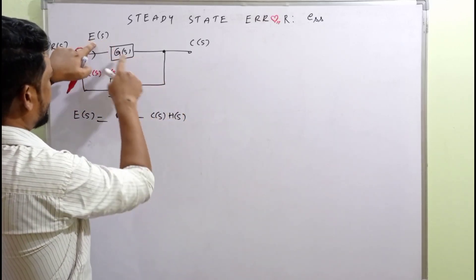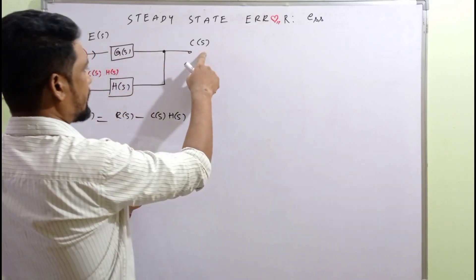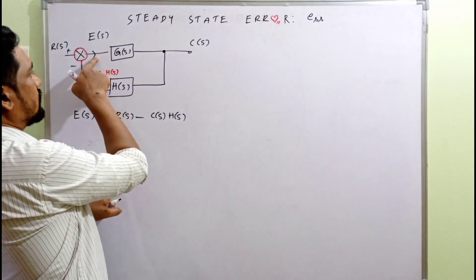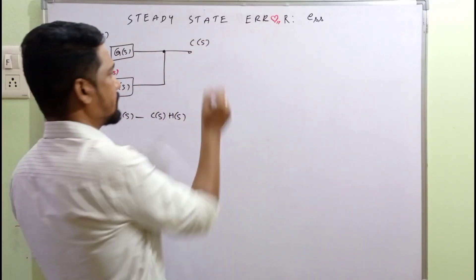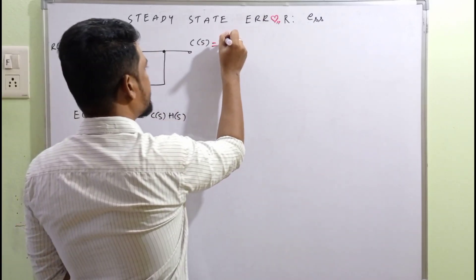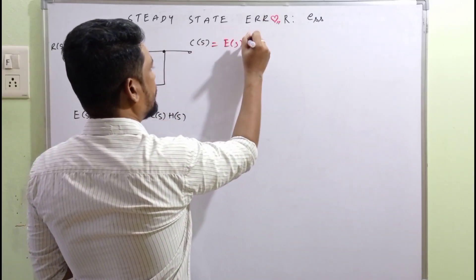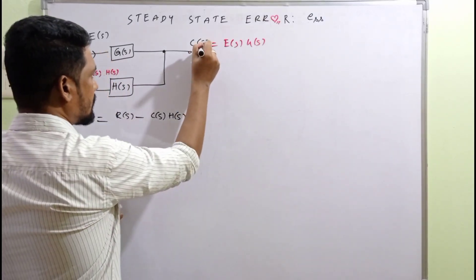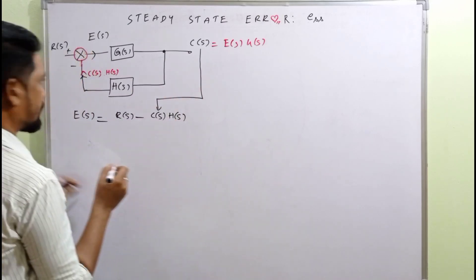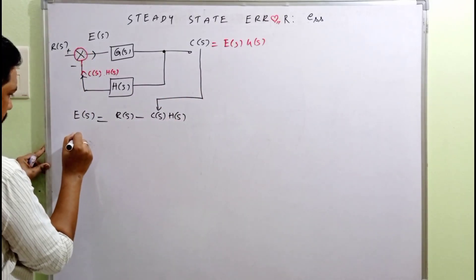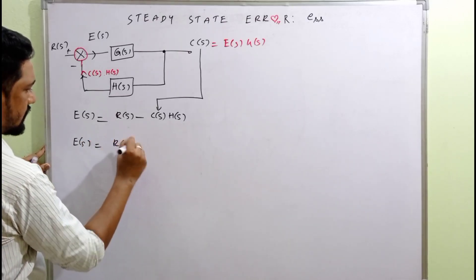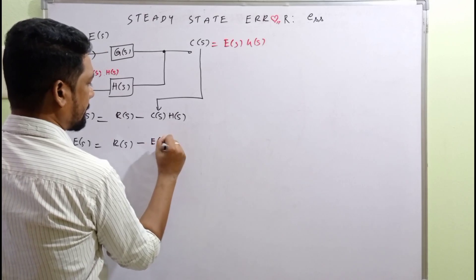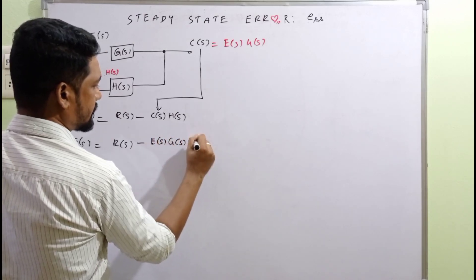Now E(s) multiplied with G(s) will give C(s). So C(s) = E(s) into G(s). Substituting this into the error equation, we can plug in and reduce: E(s) = R(s) minus E(s)·G(s)·H(s).